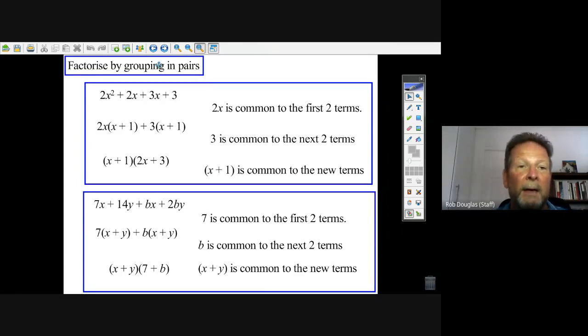Okay, now we're going to look at factorizing by grouping. Let's take a look at this. You've got 2x squared plus 2x and you've got 3x plus 3. What you do is you kind of group these two together here and you look what's common to both of these.